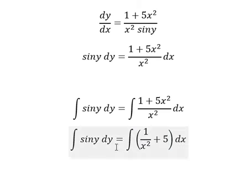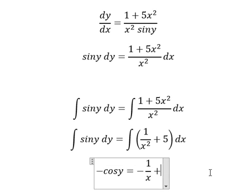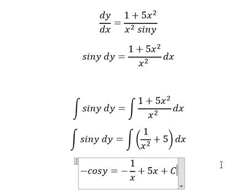The integral of sin y equals negative cos y. The integral of 1 over x squared equals negative 1 over x. The integral of 5 equals 5x, and we add the constant C.